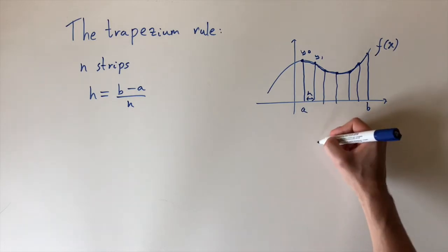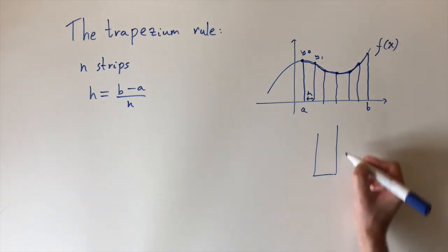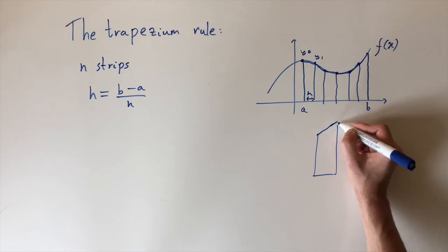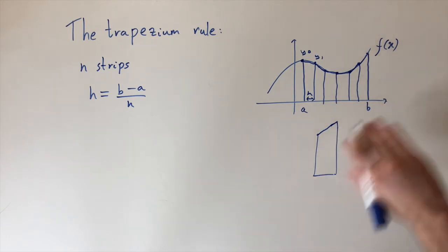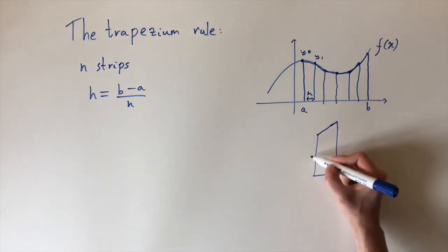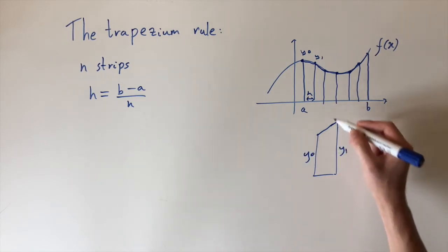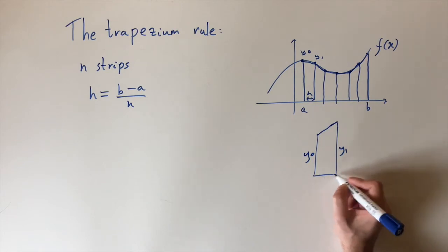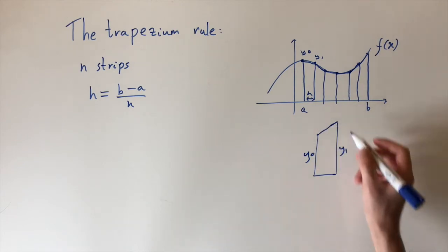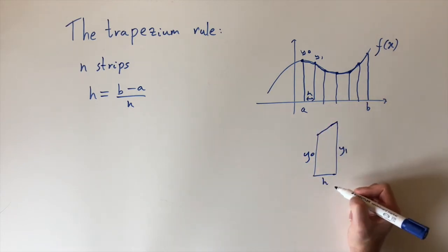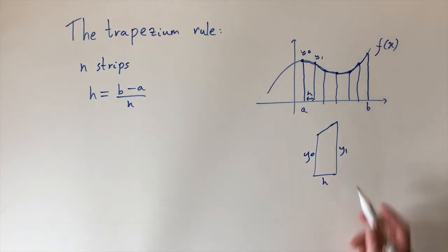So first let's think about a general trapezium, which is kind of like a rectangle but one of its sides is leaning. If I call this length y0 and this one y1, this would be kind of looking at the first one. We're looking at trapeziums with a width of h.